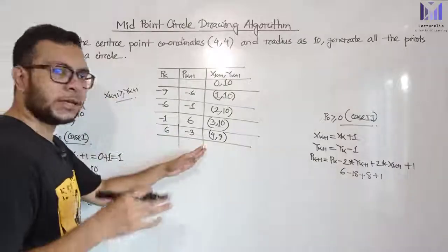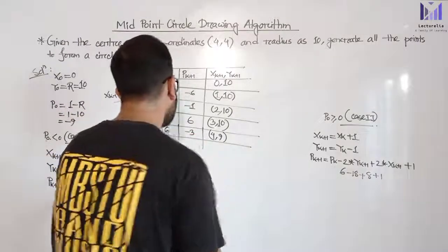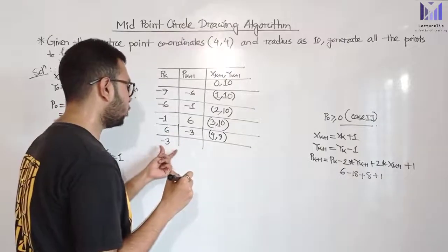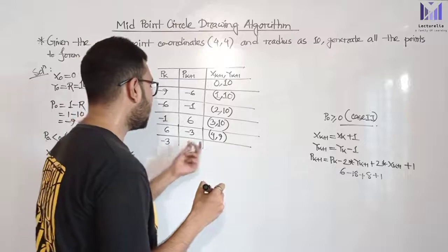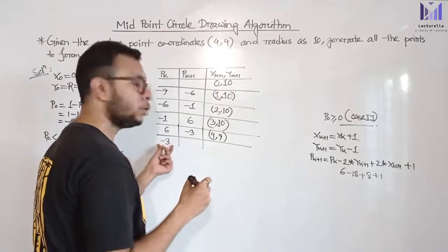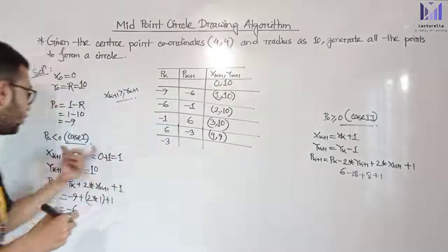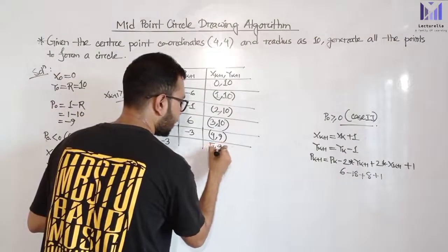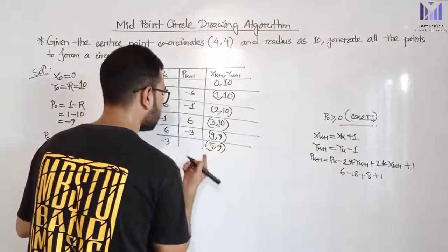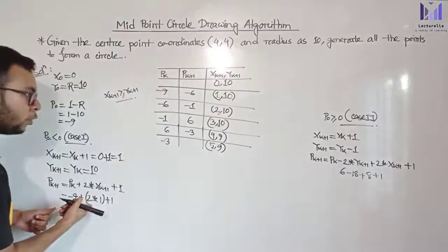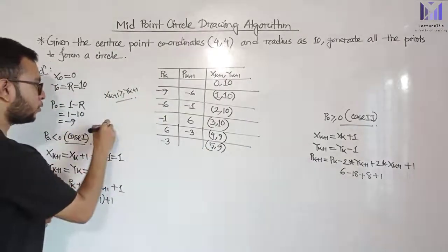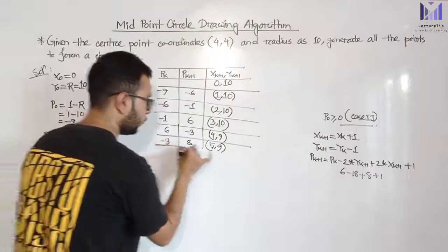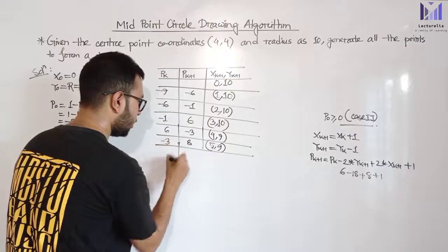This is the previous circle drawing algorithm and this is a correction. The corrected value is minus 3. The next decision parameter is minus 3. p0 case 1 is executed. x is incremented, y stays. Next decision parameter: 5 into 2 minus 10 plus 11 = minus 3 plus 11 = minus 8. We further proceed with minus 8.